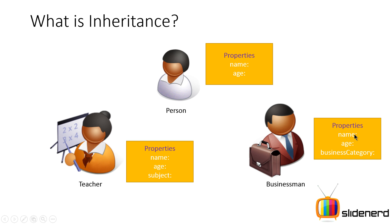A businessman can have properties like name, age, and business category. If you observe carefully, there are certain properties common among all three. In the real world, every teacher has to be a person and every businessman is also a person, but every person is not a teacher or businessman. Representing these kinds of relationships is what inheritance is all about.